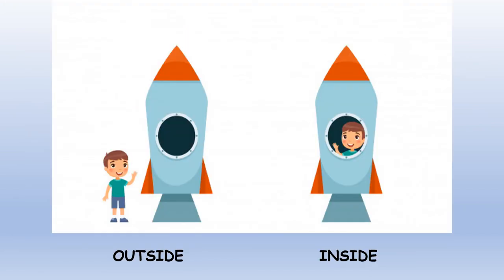Kids, here you can see two pictures — two rockets. Here the boy is standing outside the rocket. And here the boy is sitting inside the rocket. Here the boy is standing outside. And here the boy is sitting inside. Outside. Inside.